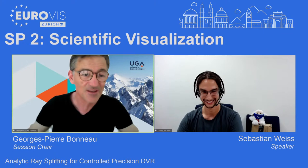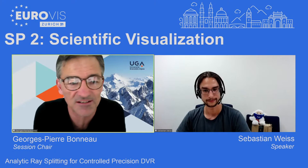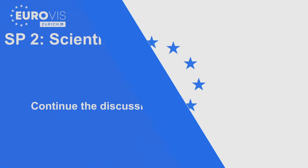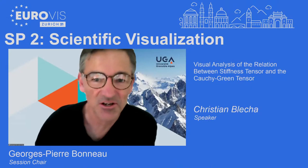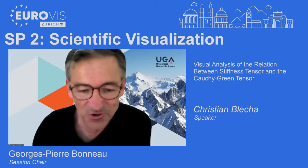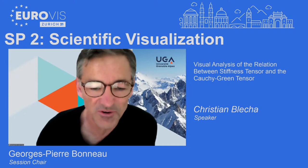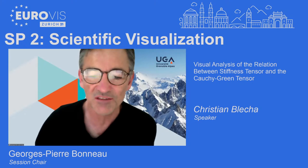Thank you very much, Sebastian, for this very nice talk. The next talk is entitled visual analysis of the relation between stiffness tensor and the Cauchy-Green tensor, given by Christian Blecher from Leipzig University, Germany.